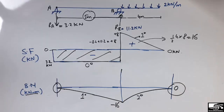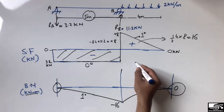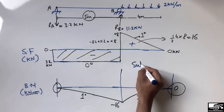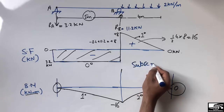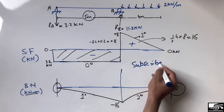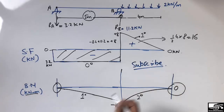The bending moments are zero at both ends because there are no fixed supports to resist rotation. I hope you understand how to draw the shear force and bending moment diagram for this overhanging beam. Don't forget to subscribe to the channel for daily engineering videos. Thank you for watching.